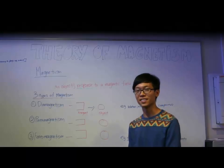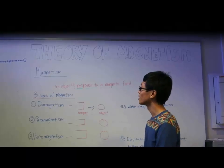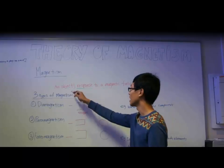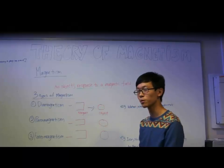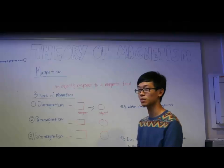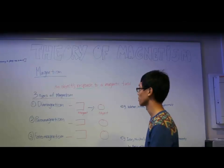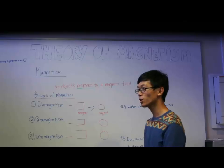Hi guys, welcome to the theory of magnetism. For the first question: what is magnetism? Magnetism is actually an object's response to a magnetic field. The response usually comes in the form of a force. For magnetism, there are actually three types.